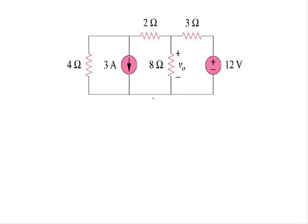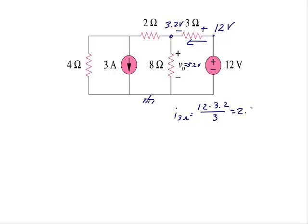So now we're going to use a technique called walking through the circuit to find the power developed by the two sources. I'll label the ground at the bottom of the circuit. The value we found is 3.2 volts, so the voltage at this node is 3.2 volts. Using KVL, KCL, and Ohm's Law: if this node is 3.2 volts and this node is 12 volts, the current through the 3-ohm resistor flows from higher to lower potential. The current for the 3-ohm resistor is 12 minus 3.2 divided by 3, which equals 2.93 amps.